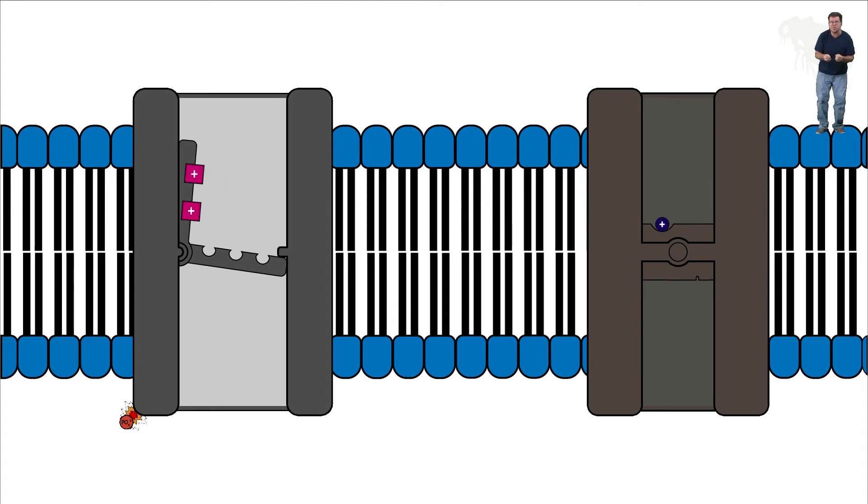And again, the real takeaway here with secondary active transport is to remember you use a pump protein to create a gradient and you use the energy of that gradient to drive other active transport processes.